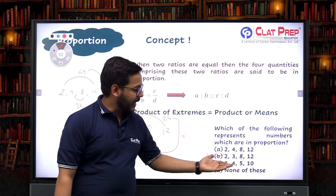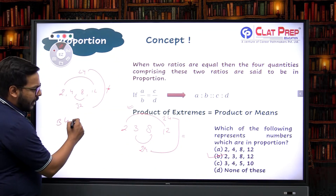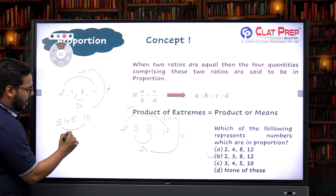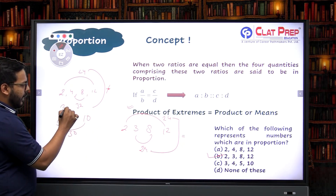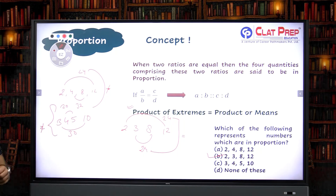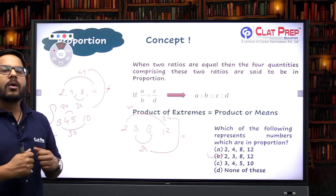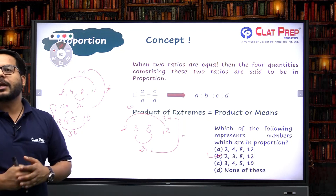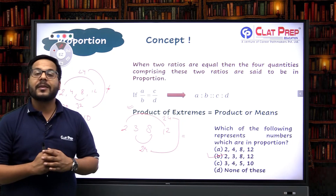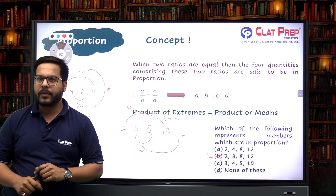We can also check the third option: three, four, five and ten. Clearly 3 into 10 is 30, and 5 into 4 is 20 — these two are not equal. So the first example confirms: among the given options, the four quantities that are in proportion are in option B.